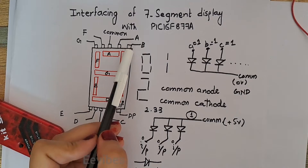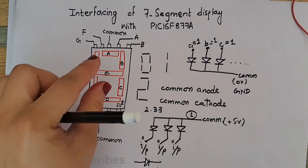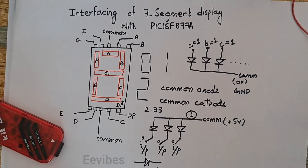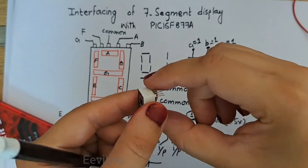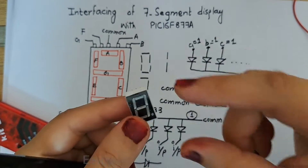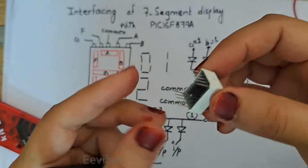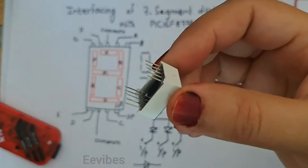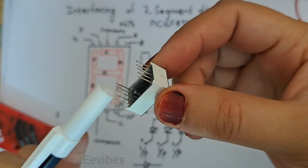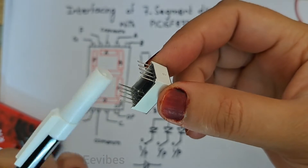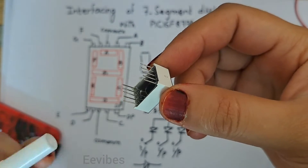Let's have an idea of the connections and pins of the seven segment display. I am using a single digit seven segment display and will be designing an up counter which will count from zero to nine. If you have a close look, at the bottom and at the top you have five pins each, so ten pins total are present on it.